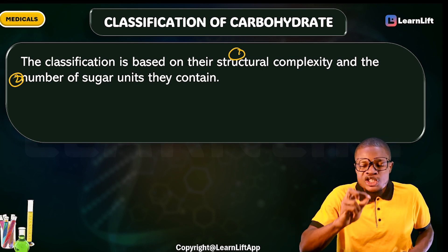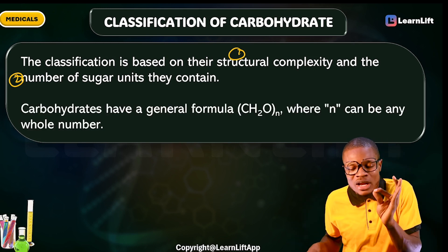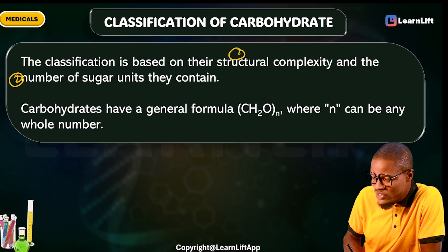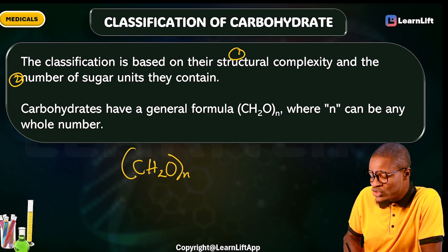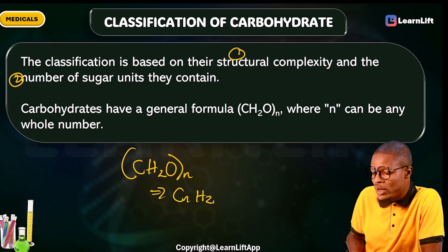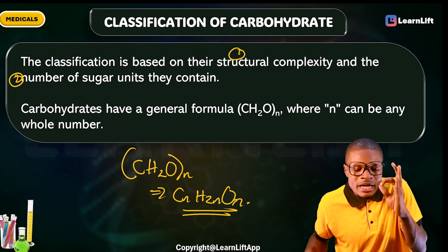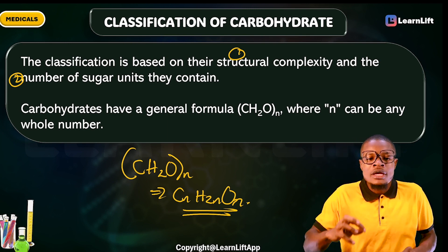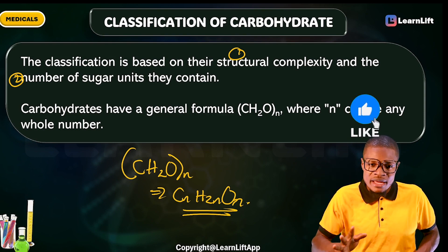Carbohydrates have a general molecular formula. Simply remember it as (CH₂O)n, which expands to CₙH₂ₙOₙ. Here, n is any whole number from three and above. This is the general molecular formula for all carbohydrates.